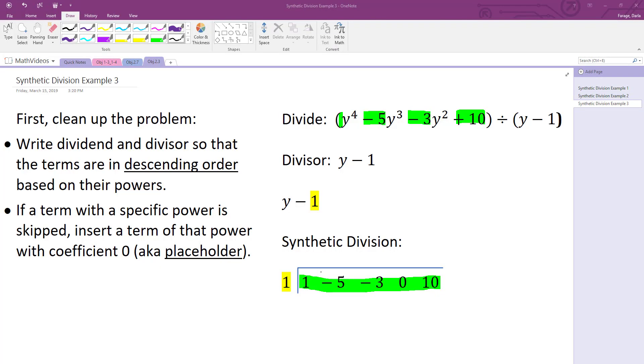Let's go ahead and do another example. This time our polynomial is going to be degree 4 and our divisor is going to be y minus 1. So we are of the correct form, x minus a. Obviously we're using y's instead of x's, but that's not a problem.